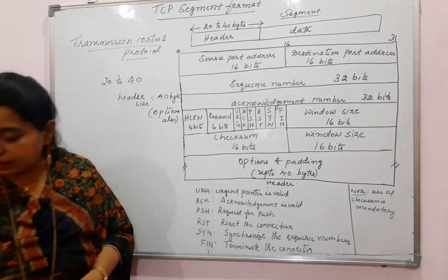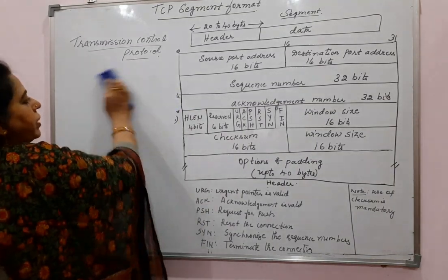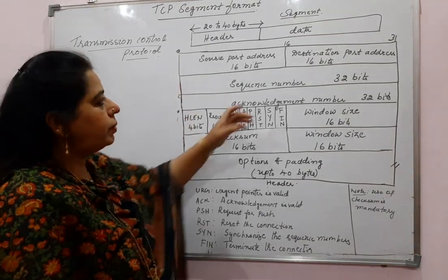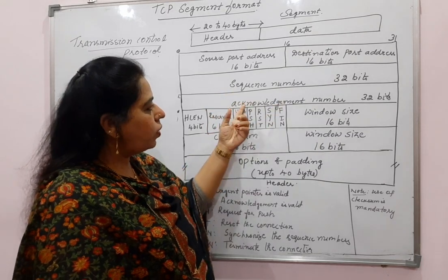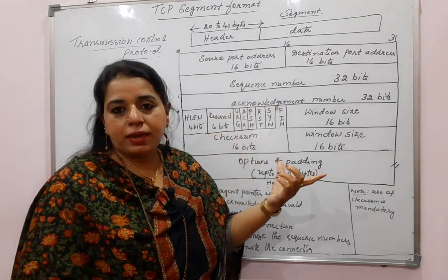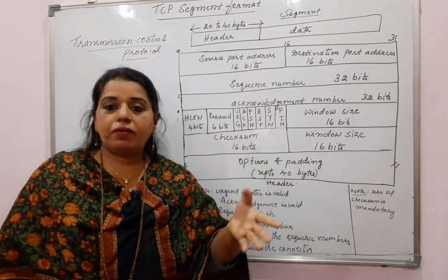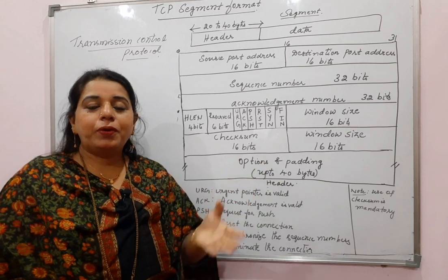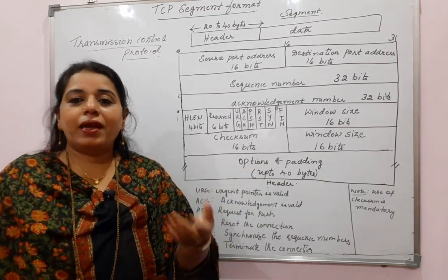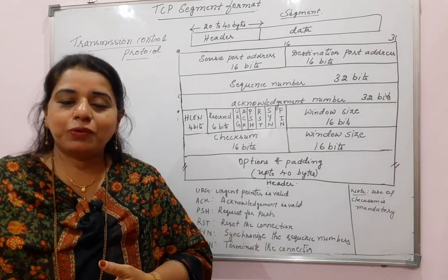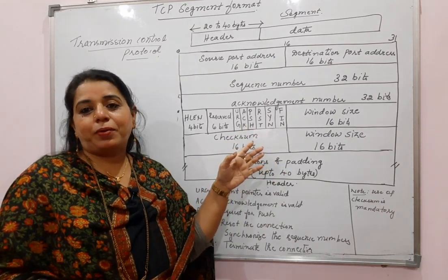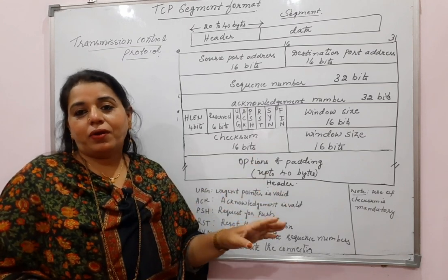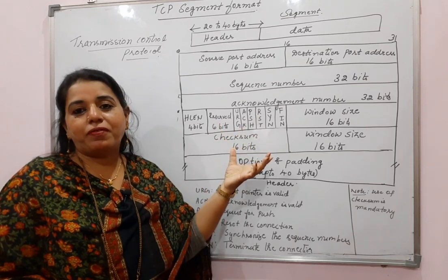Let us look at the different fields in the TCP format. To begin with, the first field is the source port number, then the destination port number, then the sequence number, acknowledgement number, and so on. If you compare the fields in TCP with those in UDP, you can see there are more fields in TCP. The reason is clear: UDP is a simple protocol not supporting error control, flow control, or congestion control. TCP supports all three, which is why it has more fields in the header format.